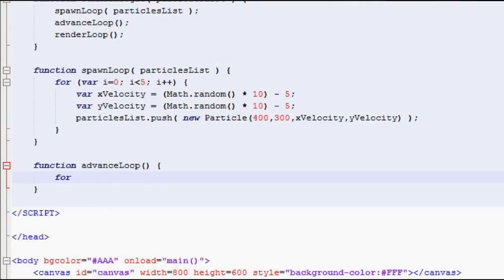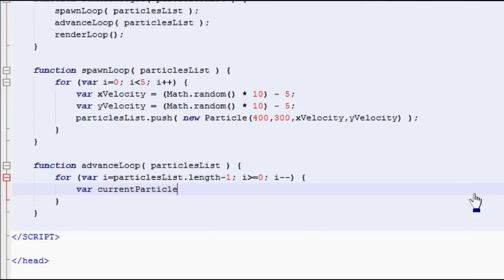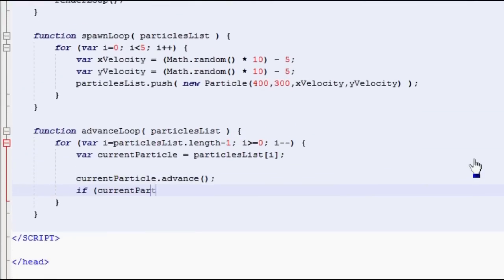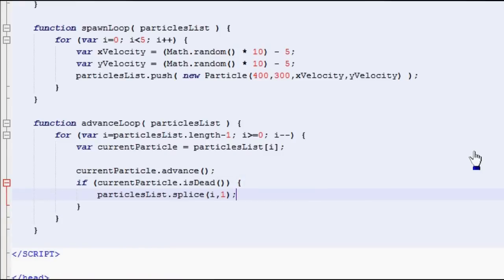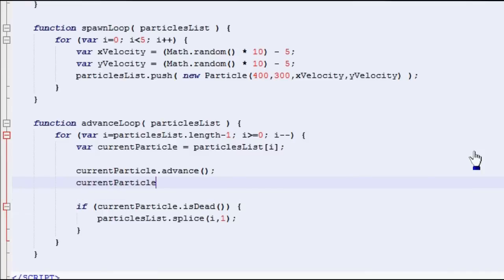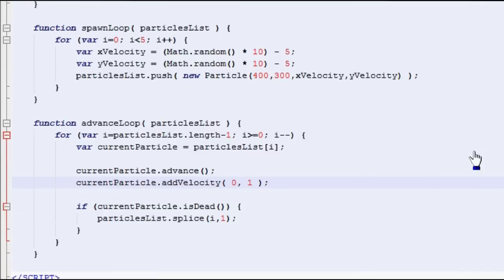Of course, this would be a non-issue if you're using a language like Java. Java actually implements iterators, and when you have that, you can safely delete things as you're iterating through a list. In my particular use case in JavaScript, I don't seem to have that luxury, so too bad. Loop through your list of particles, call the advanced function, then check to see if the particle is dead. If it is, remove it from the list. This would probably also be a good time to call add velocity to add gravity to your simulation.